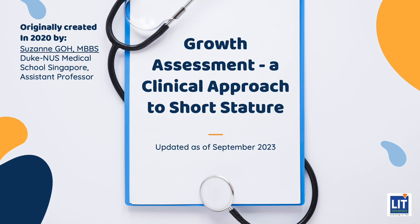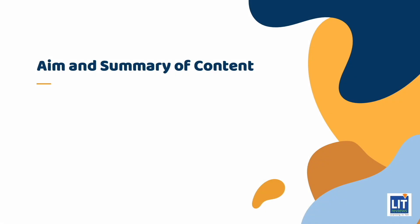This VAP focuses on how to assess vertical growth in a child, and specifically how to approach a child with short stature. The aim is for you to learn how to think critically and clinically about how a child grows and the possible factors that may be contributing to poor growth.